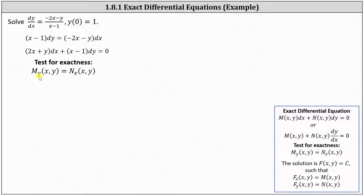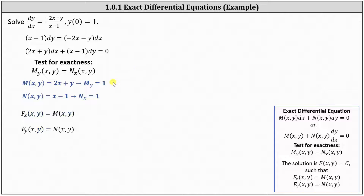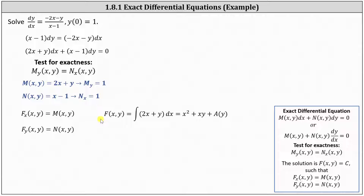The partial of M with respect to y is the derivative of 2x + y with respect to y treating x as a constant, which gives 1. The partial of N with respect to x is the derivative of x − 1 with respect to x, which is also 1. Because the partials are equal we have an exact equation. Integrating the partial of F with respect to x equal to M with respect to x gives F = x² + xy + a(y).